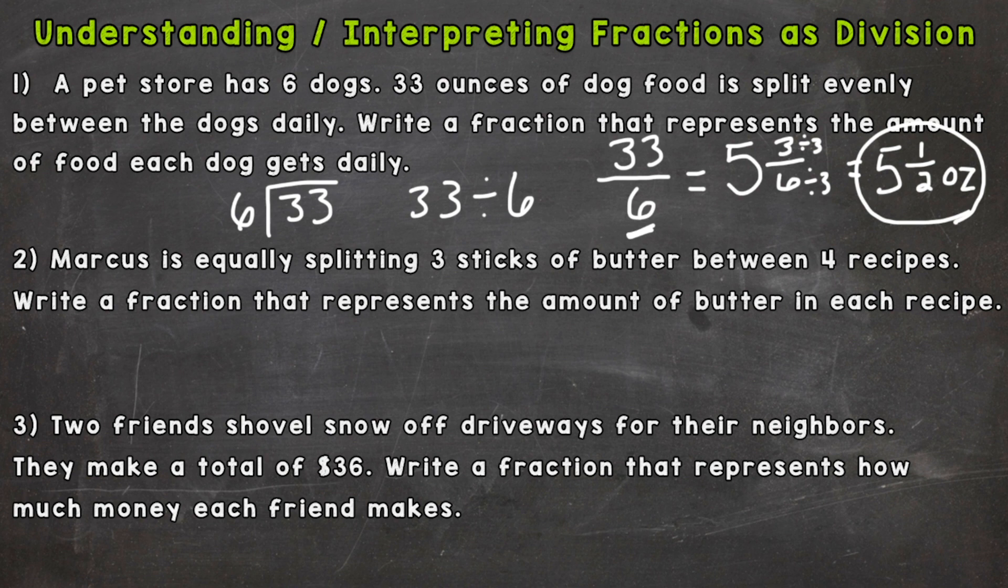Let's go to number 2. Marcus is equally splitting three sticks of butter between four recipes. Write a fraction that represents the amount of butter in each recipe. Again, whatever number is being divided up, that's your numerator. The number it's being divided by is your denominator, the bottom number.